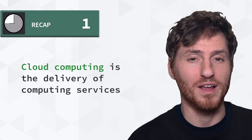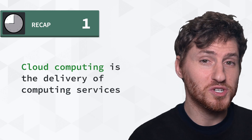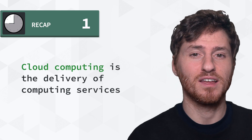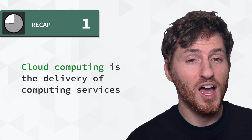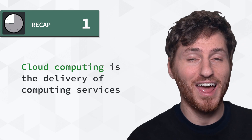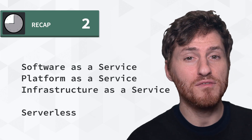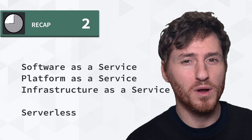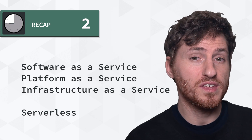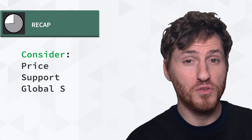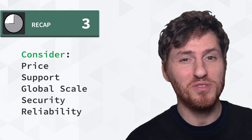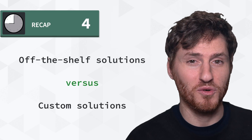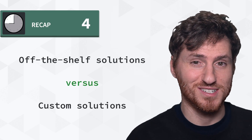To recap: one, cloud computing is the delivery of computing services — servers, storage, databases, networking, software, analytics, intelligence, and more — over the internet, which is the cloud. You typically only pay for the cloud services you use, helping lower the operating costs, run infrastructure more efficiently, and scale as your business needs change. Two, you have three types of cloud computing: Software as a Service, Platform as a Service, and Infrastructure as a Service. There's a fourth one called Serverless, but we'll tackle that at a later point. Three, when purchasing cloud computing services, the main things to consider are price, support, global scale, security, and reliability — and Linode has all of them. And four, you have off-the-shelf solutions and customized solutions.